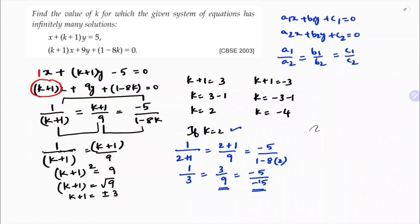Now I will check for k equals minus 4. If it is minus 4, I will substitute the values: 1 by (minus 4+1) equals (minus 4+1) by 9 equals minus 5 by (1-8×minus 4). So 1 by minus 3 equals minus 3 by 9 equals minus 5 by 33.